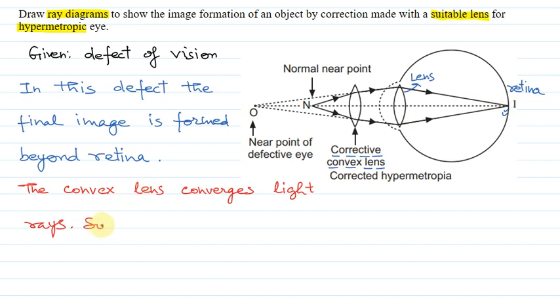Suitable focal length convex lens is used. So if suitable focal length convex lens is used, hypermetropia is corrected.